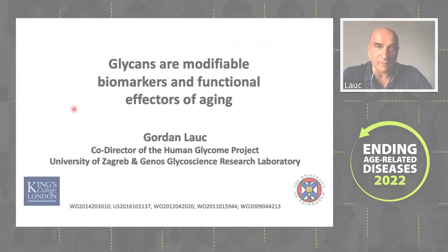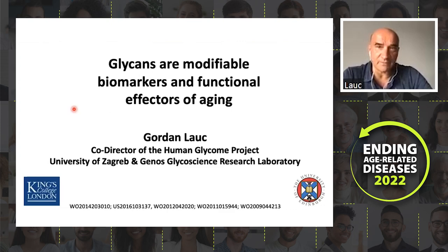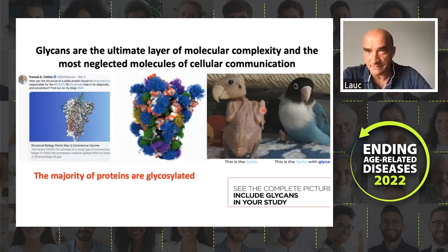I will tell you something about glycans, which we believe are the modifiable biomarkers, but also functional effectors of aging. Not so many people are familiar with glycans, so I will just shortly say that they are the ultimate layer of molecular complexity, but at the same time they are the most neglected molecules of cellular communication.